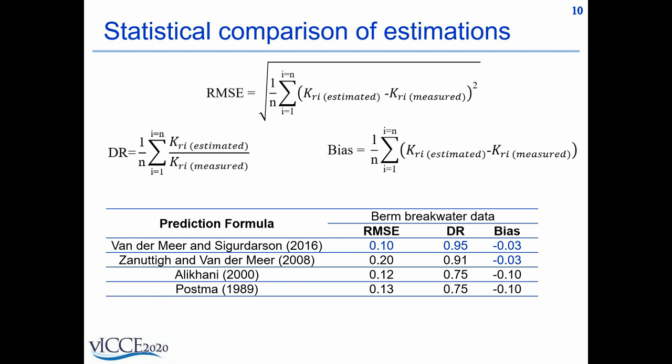From the table we can see that the Van der Meer and Sigurdarson formula works best with the lowest RMSE, a DR close to 1 and a low bias. Also, all the formulas are currently underestimating the wave reflection from berm breakwaters.